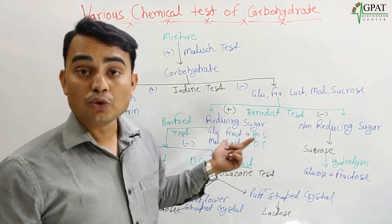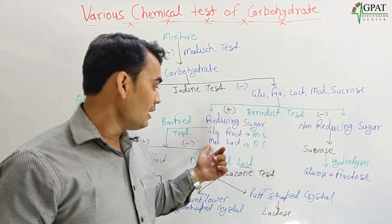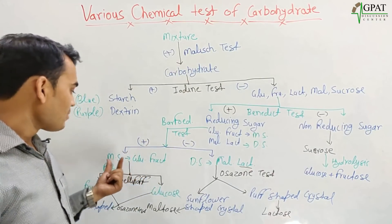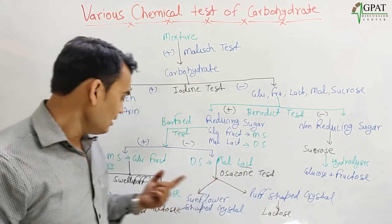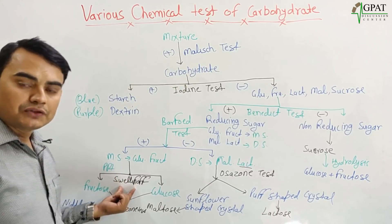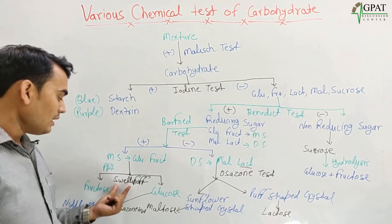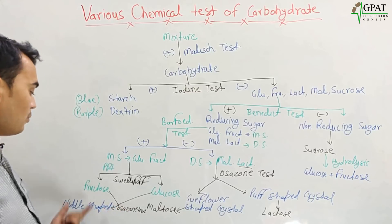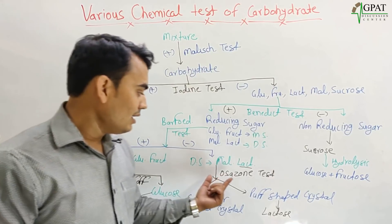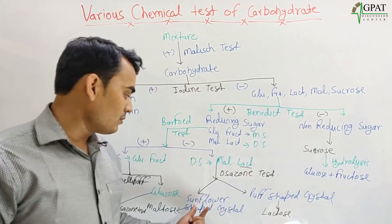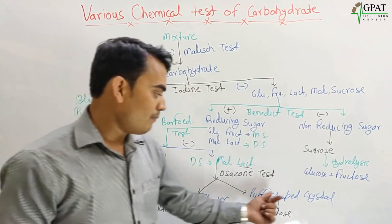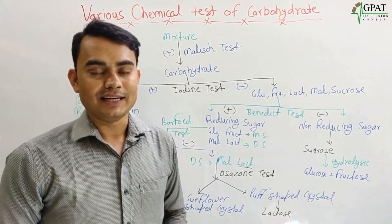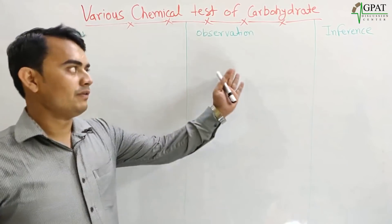On hydrolysis of sucrose, glucose and fructose form, confirming it is sucrose. If the Benedict test is positive, there are two possibilities: monosaccharide — glucose or fructose — or disaccharide — maltose or lactose. We apply the Barfoed test: positive means monosaccharide, negative means disaccharide. The Seliwanoff test differentiates ketone from aldehyde carbohydrates — positive precipitate means fructose, negative means glucose. Osazone test: glucose and fructose form needle-shaped crystals; maltose forms sunflower-shaped, lactose forms puff-shaped crystals.